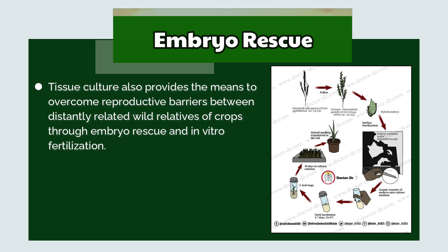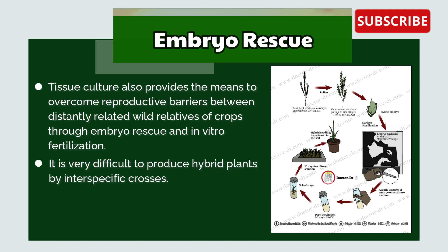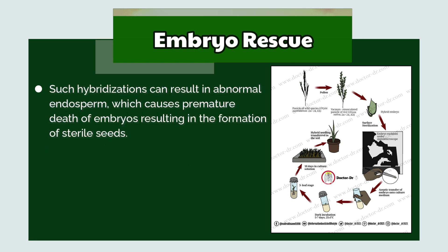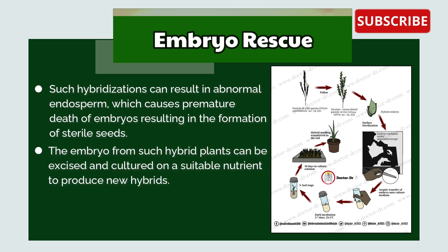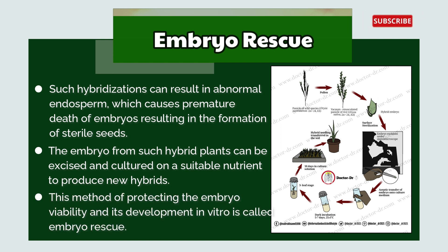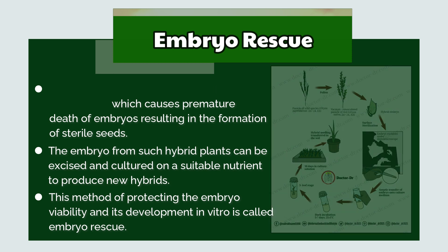Embryo rescue: Tissue culture provides the means to overcome reproductive barriers between distantly-related wild relatives of crop plants through embryo rescue and in vitro fertilization. It is very difficult to produce hybrid plants by interspecific crosses. Such hybridizations can result in abnormal endosperm, causing premature death of embryos and the formation of sterile seeds. The embryo from such hybrid plants can be excised and cultured on a suitable nutrient medium to produce new hybrids. This method of protecting embryo viability and its development in vitro is called embryo rescue.